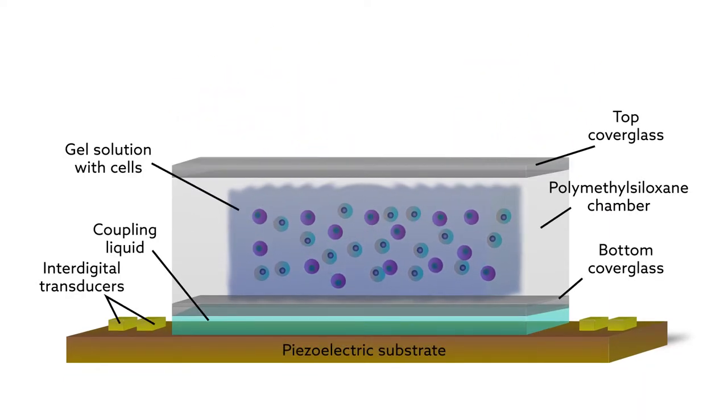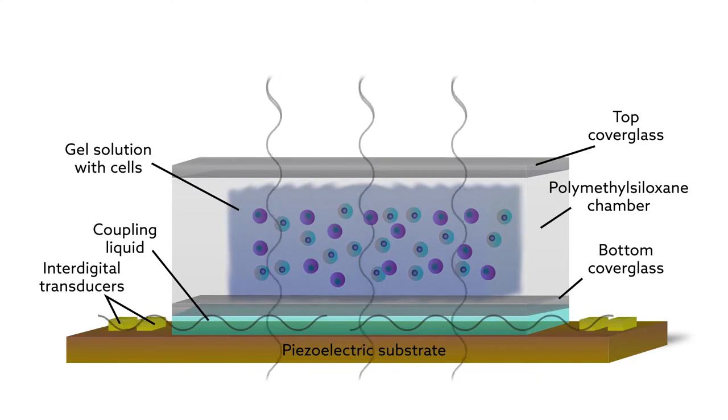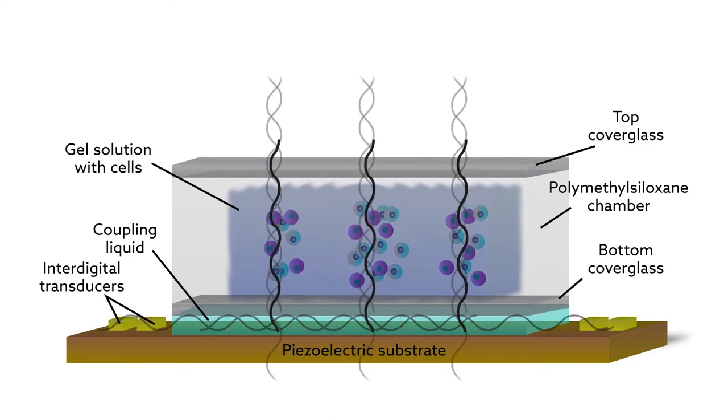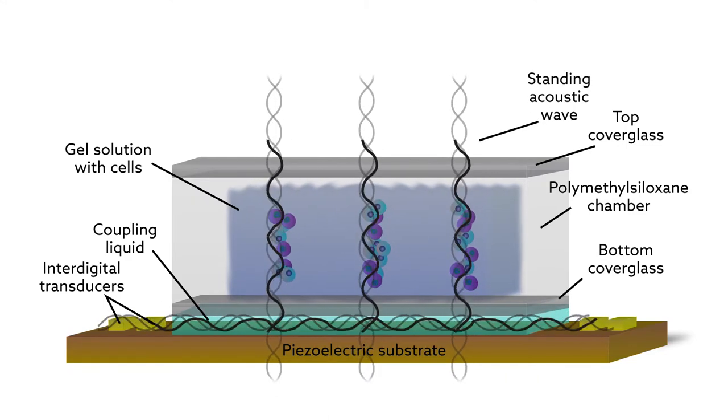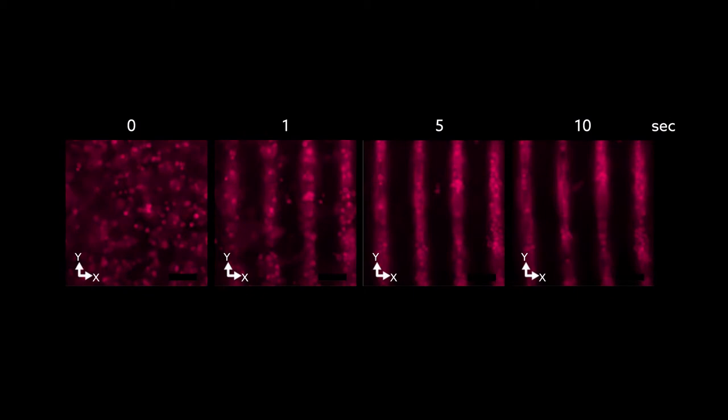Before the gel solidified, the mixture was exposed to standing surface acoustic waves. These tunable sound waves directed the cells into uniform rows mimicking microvessels. As the hydrogel solidified, it held the cells in place, and they grew and matured into their new orientation.